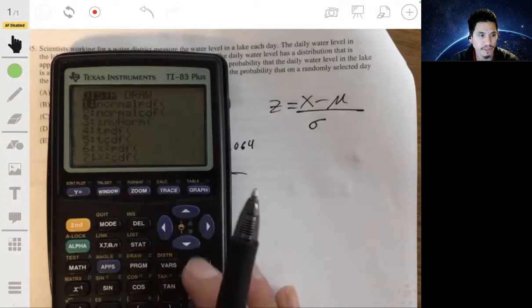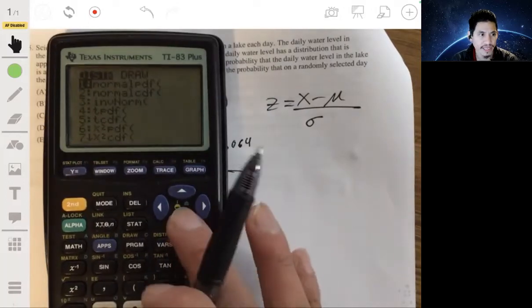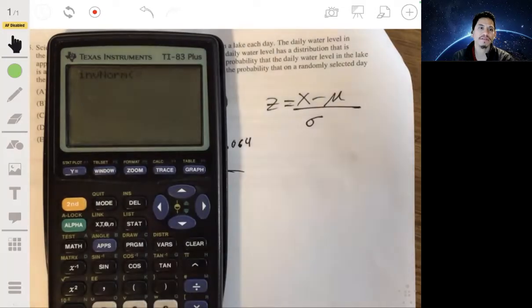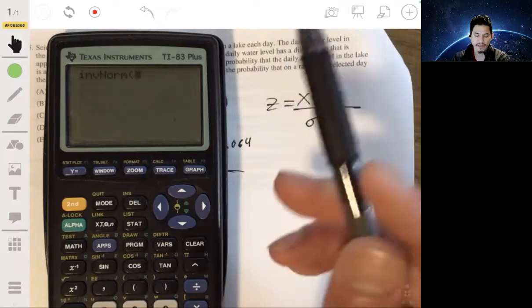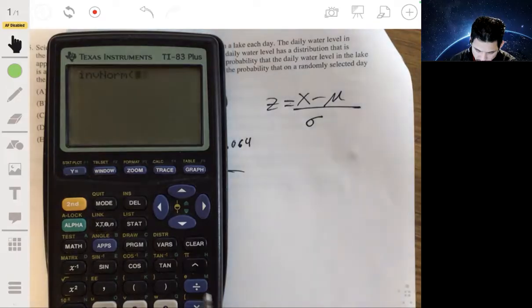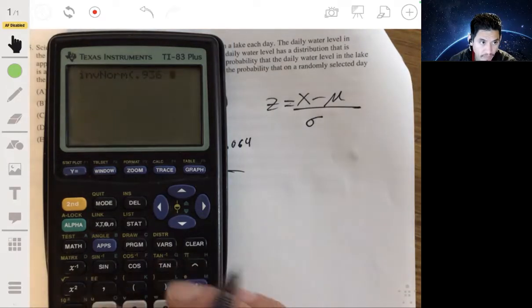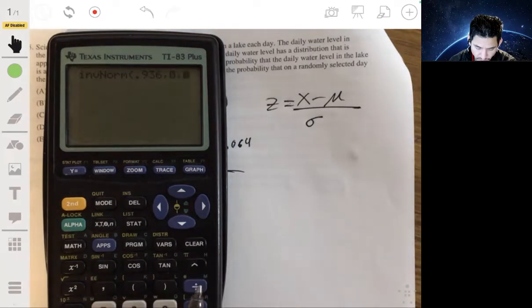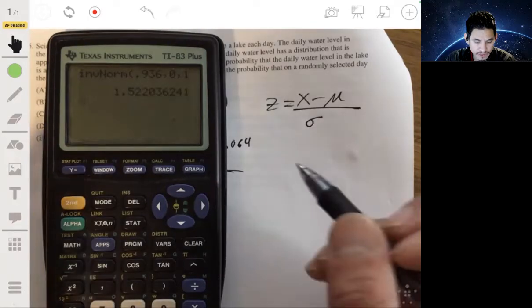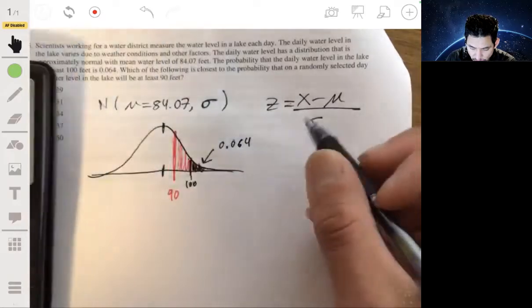So we can use a table or we can just use our technology. So I'm going to use the distribution. Let's go to inverse normal mode. And what we have to enter here is the area to the left. So there's 0.064 to the right. 1 minus 0.064, that would be 0.936. And this is a standardized normal curve, mean zero, standard deviation 1. And so our Z value would be 1.52.